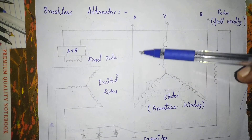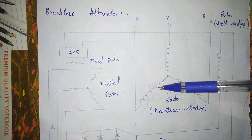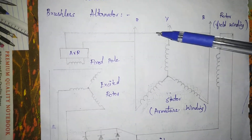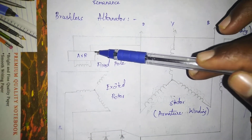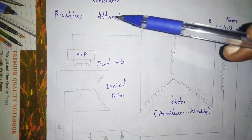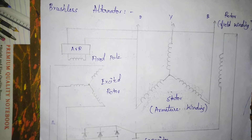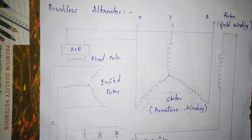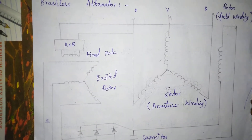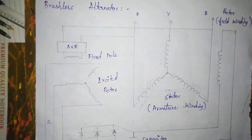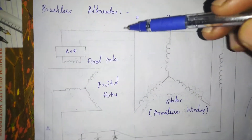We generate the stator output. The AVR — Automatic Voltage Regulator — is the second part. The first part is the transformer.